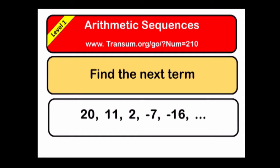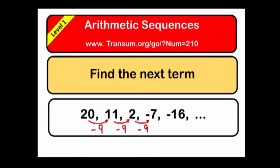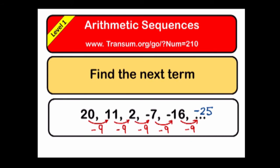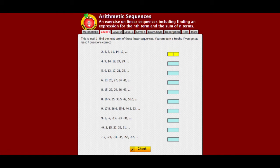The last example for level one is a sequence that starts at twenty and then goes down to eleven — it reduces. So rather than adding on, we're actually subtracting something. The difference between twenty and eleven — if you subtract eleven from twenty — you'll get nine. So we say the common difference is negative nine; we're taking away nine each time. If you subtract nine from negative sixteen, that gives you the next term: negative twenty-five. Have a go at the online exercise and click the check button often, then come back here for level two.